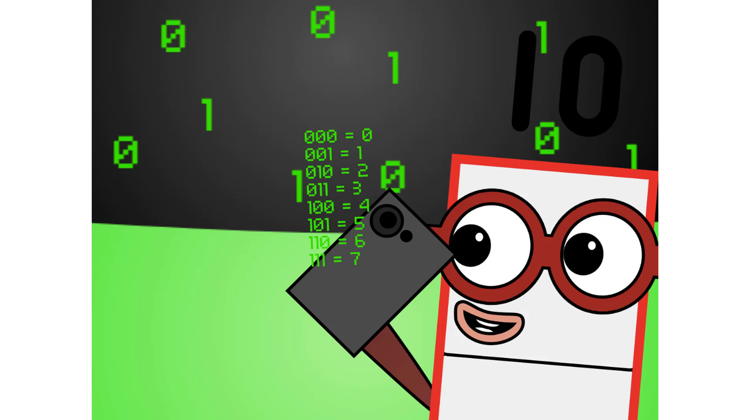There are 8 different combinations of 3 digit numbers in binary. This means that binary can easily be coded into octal. There are also 16 different combinations of 4 digit numbers in binary. This means that binary can easily be coded into hexadecimal too.